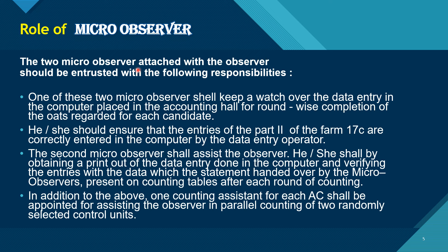The two Micro-Observers attached with the observer should be entrusted with the following responsibilities. One of these two Micro-Observers shall keep a watch over the data entry in the computer placed in the counting hall for round-wise completion of the votes recorded for each candidate. He or she should ensure that the entries of Part 2 of Form 17C are correctly entered in the computer by the data entry operator.